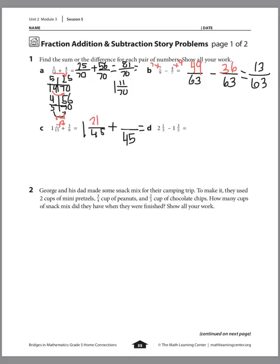And for the second fraction, 9 times what equals 45? That's right, 9 times 5 equals 45. So we multiply the numerator times 5: 3 times 5 is 15. Now we have 1 and 21/45 plus 15/45. 21 plus 15 is 36, so we get 1 and 36/45. You can also reduce that to 1 and 4/5.